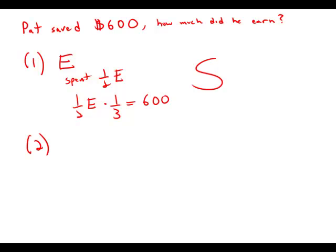Now completely ignore statement number one. Moving on to statement number two: of his earnings last month, Pat paid twice as much in taxes as he saved. He saved six hundred, so that means he paid in taxes twice as much, twelve hundred.